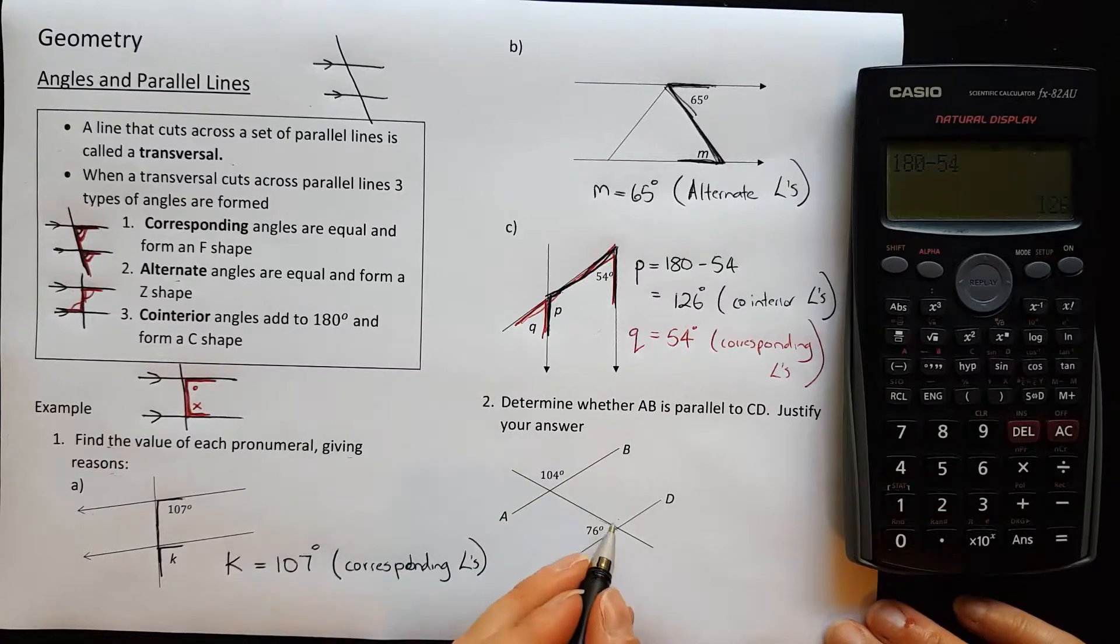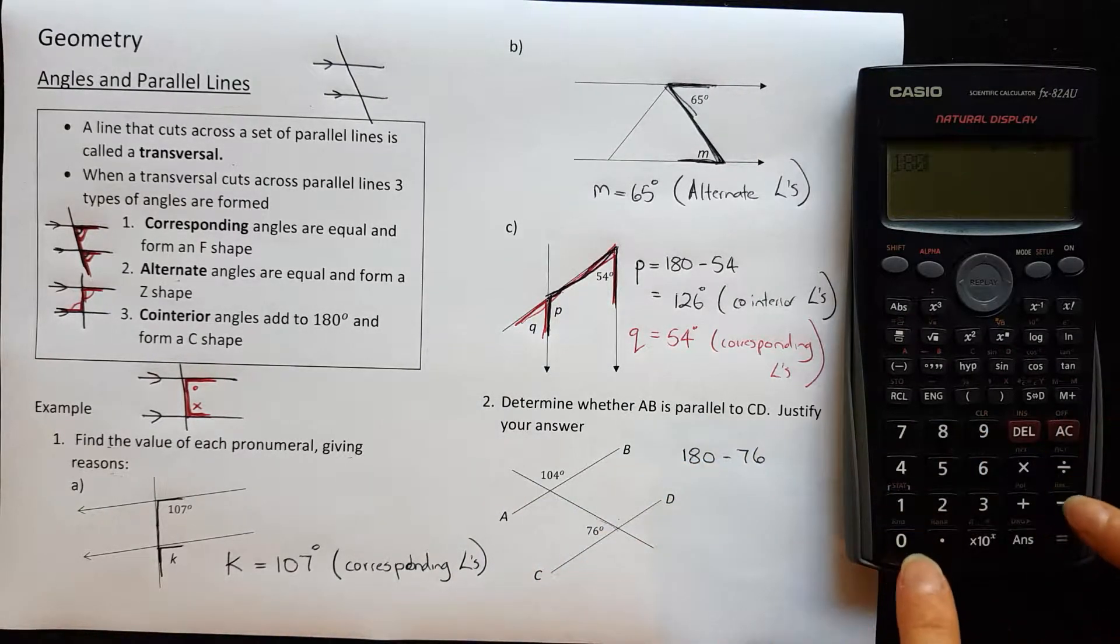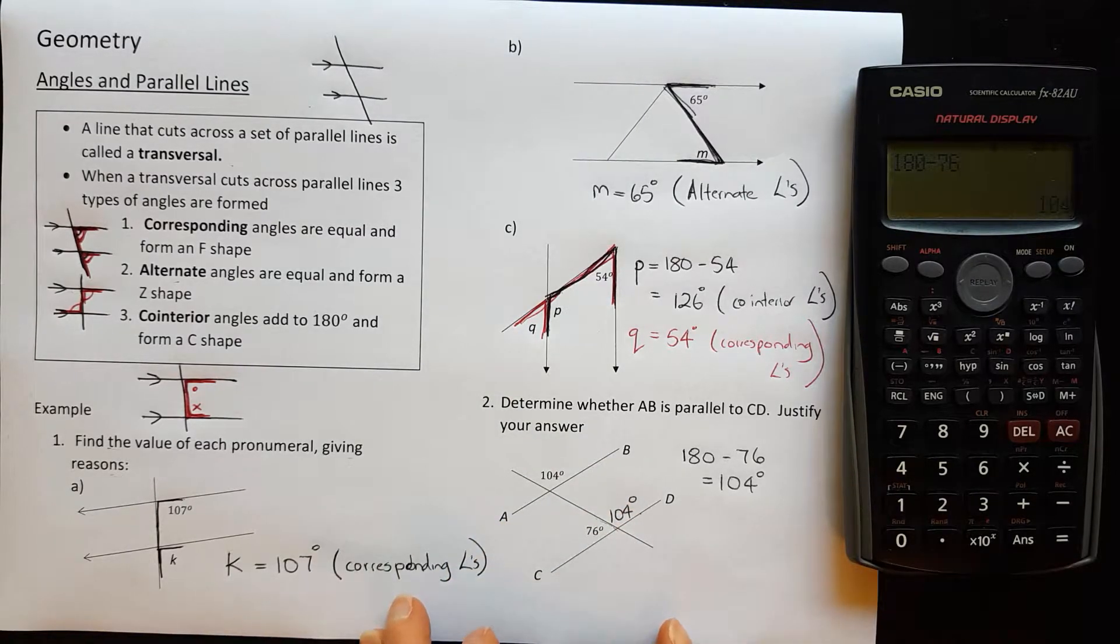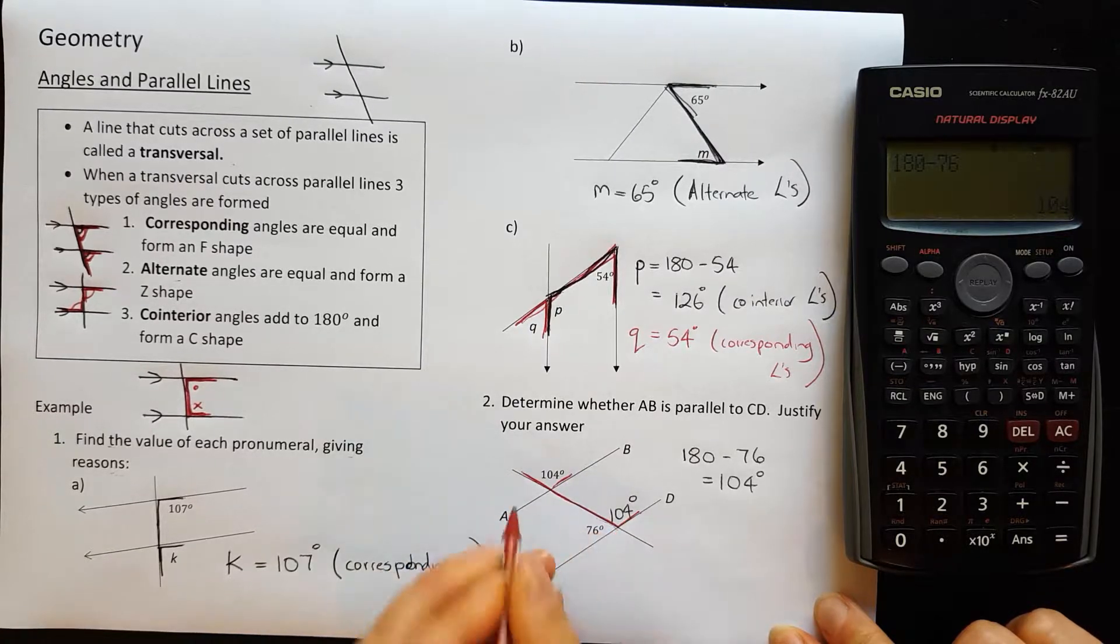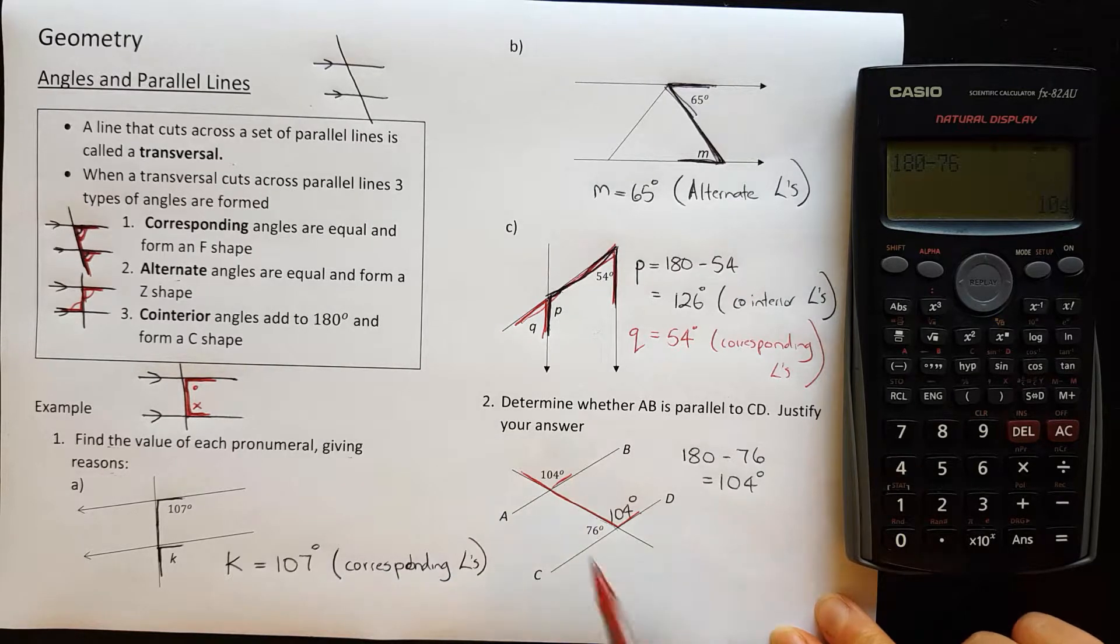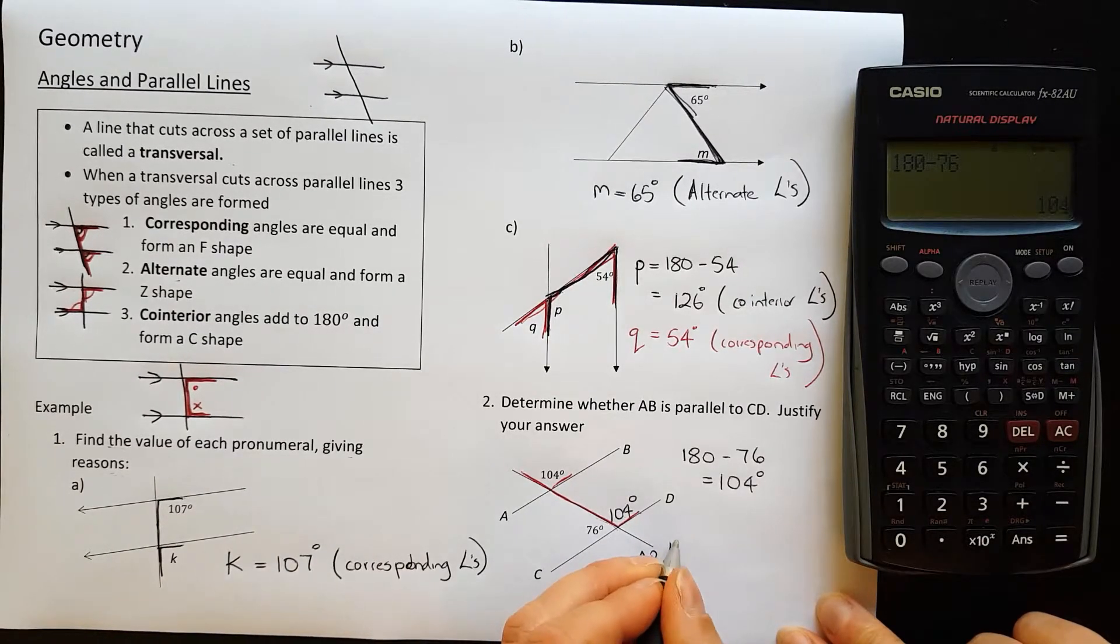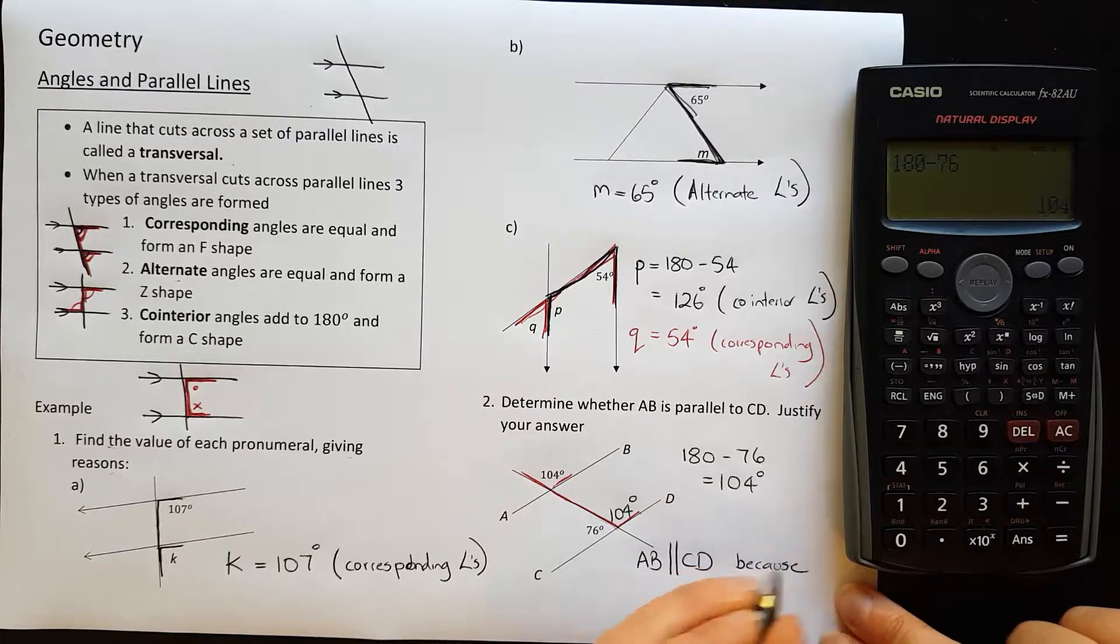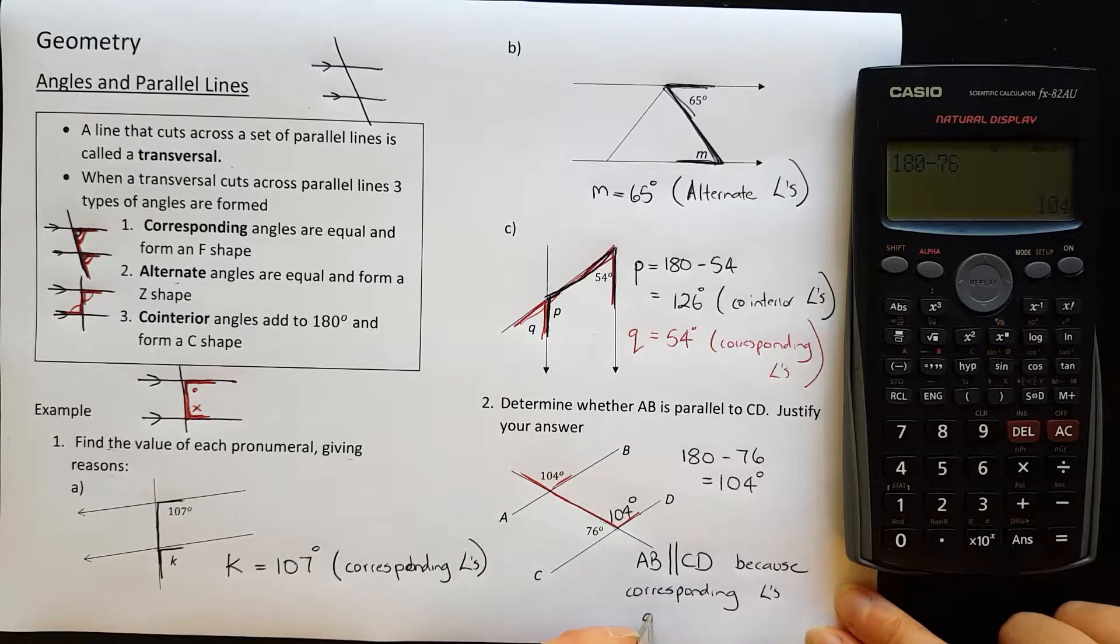So this one in here would be equal to 180 minus 76, which is equal to 104 degrees. So that angle there is 104 degrees. Now that angle and that angle that I've just found form an upside down F shape. And they are, I've just shown that they are equal. So because those angles are equal in the corresponding F shape, that means that those lines must be parallel. So I can say AB is parallel, and the symbol for parallel is two vertical lines like that, is parallel to CD because the corresponding angles are equal.